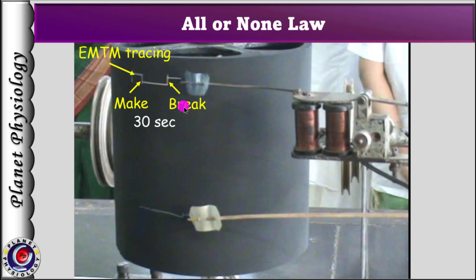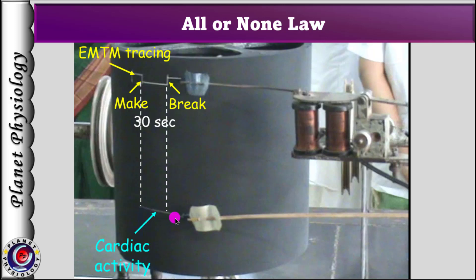We always wait for 30 seconds before the application of the next stimulus. The lower tracing is of cardiac activity, which shows a straight line indicating that both the make as well as brake stimulus failed to elicit a response from the ventricle. The same procedure is repeated each time by reducing the distance between the primary and secondary coil by 1 cm. With this basic knowledge, you can now easily follow the demonstration.